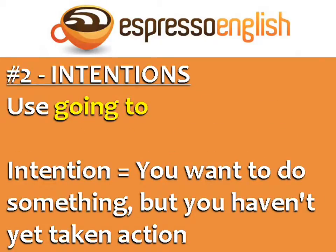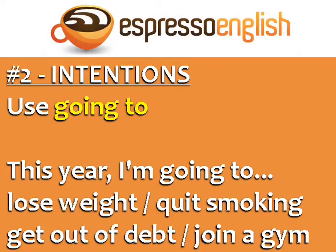For intentions, use going to. Intention is when you want to do something but you haven't yet taken action. For example: 'This year I'm going to lose weight,' 'I'm going to quit smoking,' 'I'm going to get out of debt,' 'I'm going to join a gym.' Going to is commonly used for New Year's resolutions.